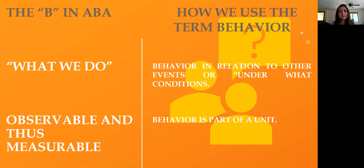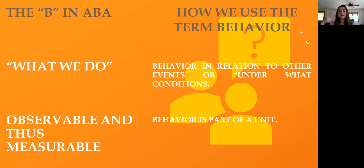The B in applied behavior analysis is what we do, and this can be observable and measurable. It includes actions, movement, and performance. Behavior is understood in relation to other events — under what conditions, things that happen before and things that happen after. Behavior is part of a unit: the ABC — antecedent, behavior, and consequence.